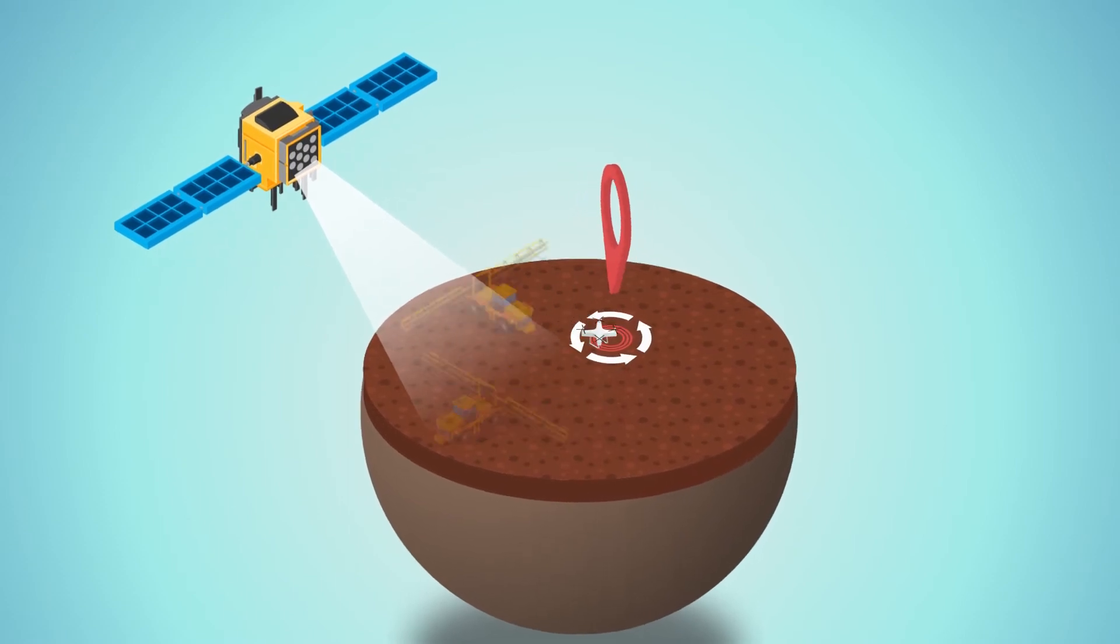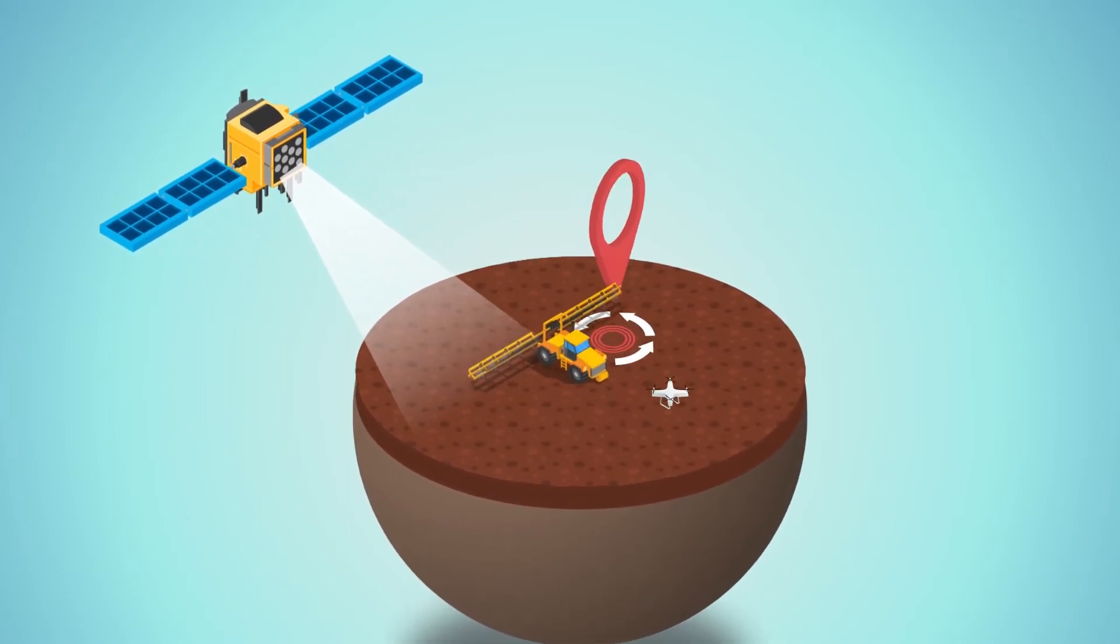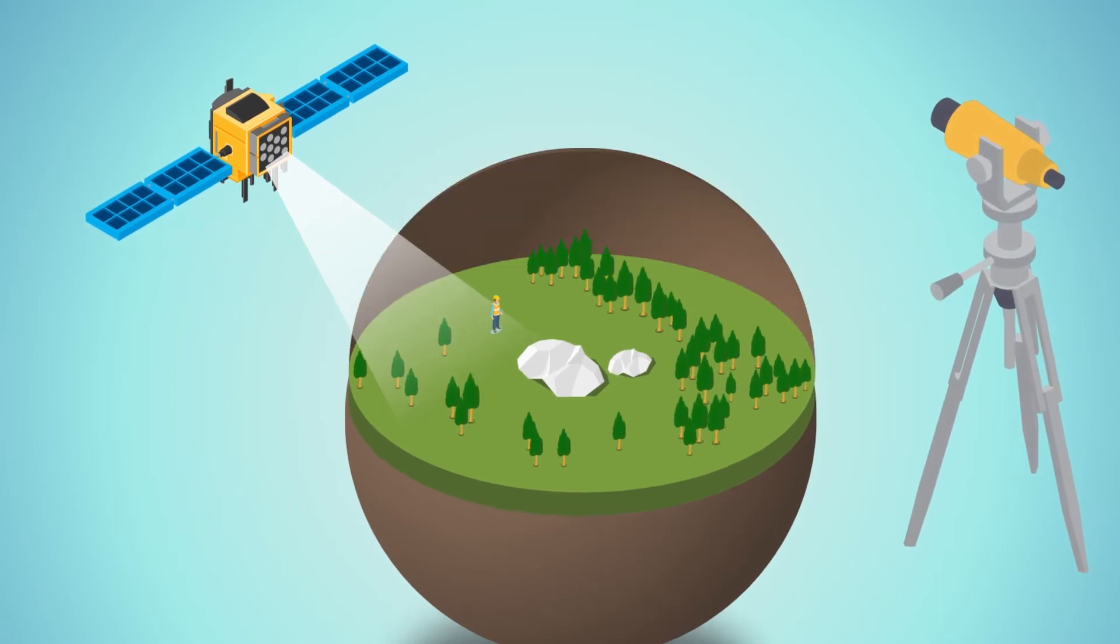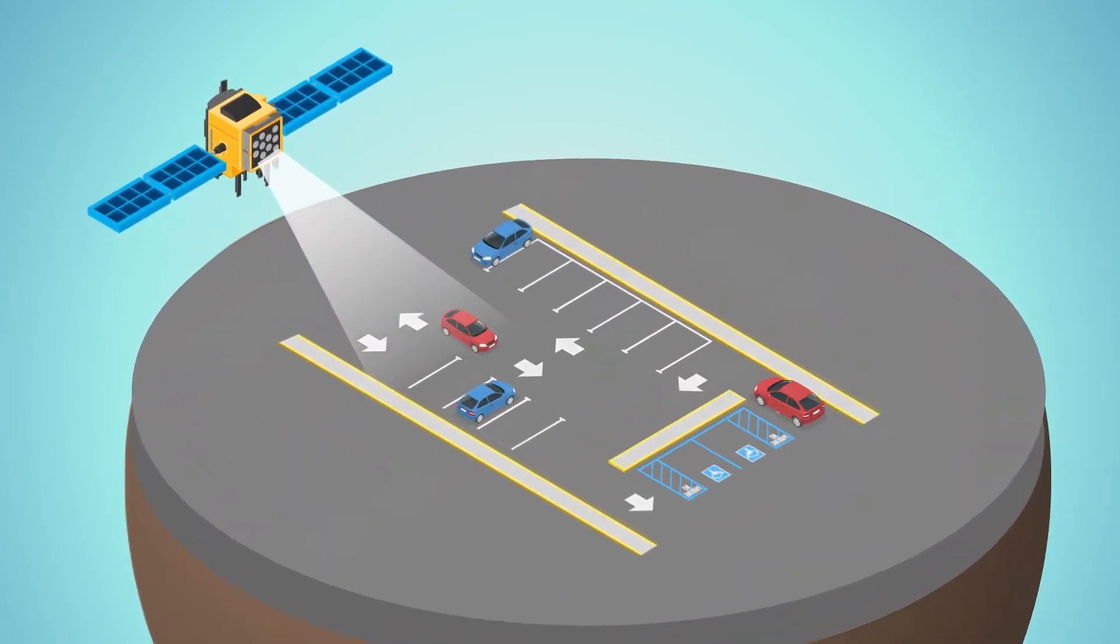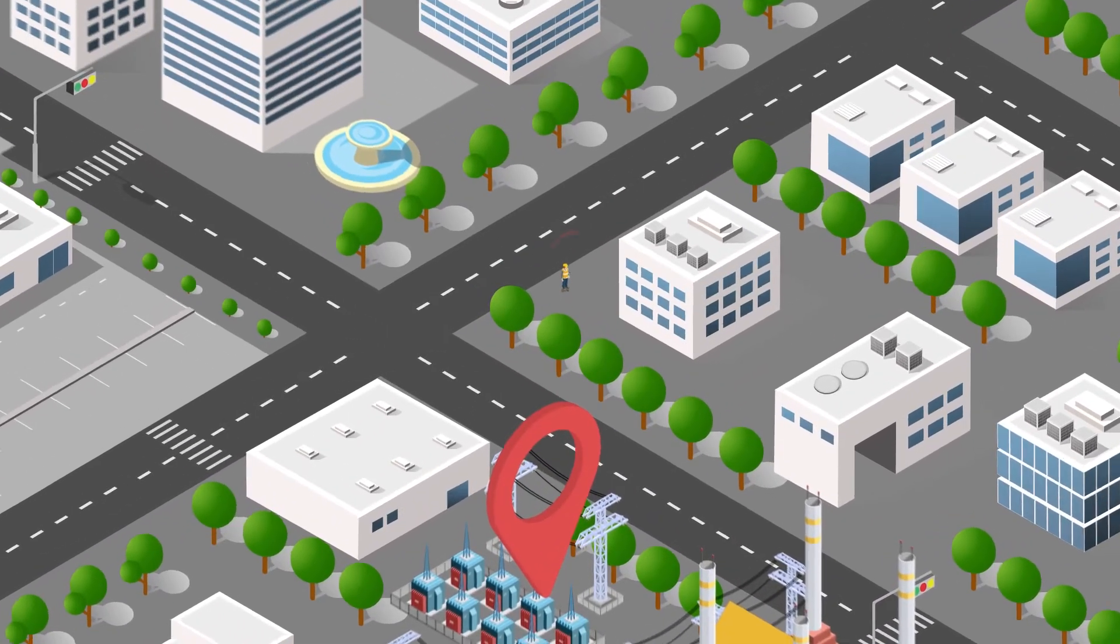Just think of a tractor applying fertilizer exactly where it's needed. Land surveying, paying parking fees based on where you are, navigating in cities using your phone, mapping utilities or finding your lost dog.